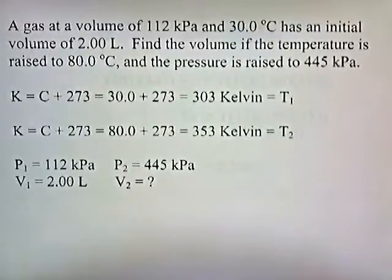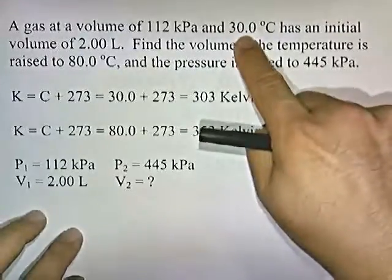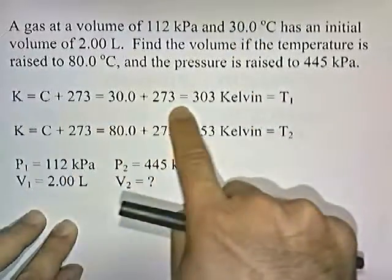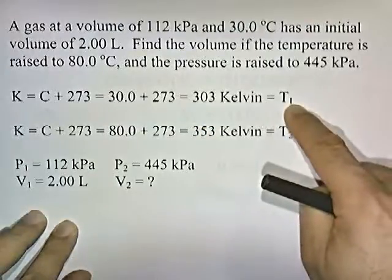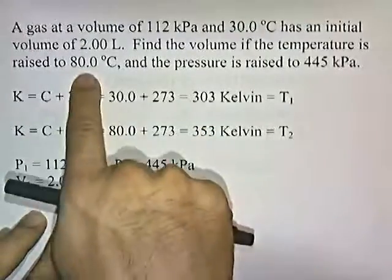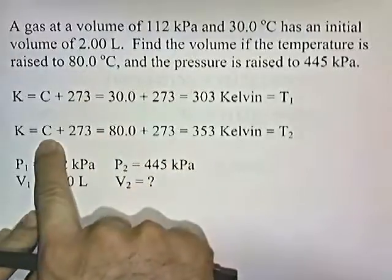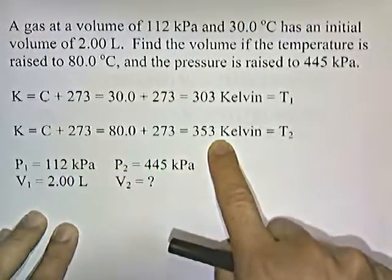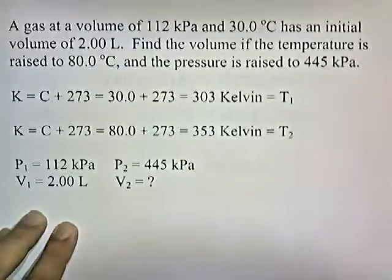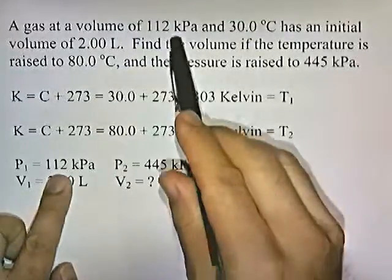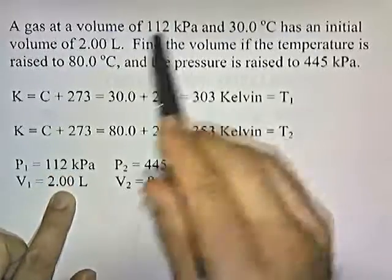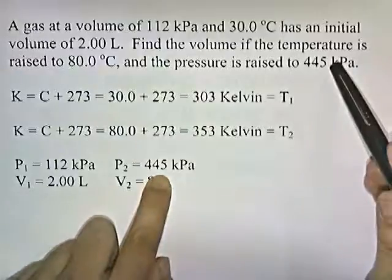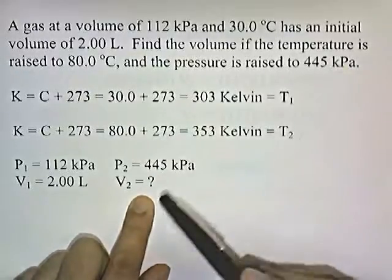First, let's convert our Celsius temperatures into Kelvin. 30 degrees Celsius: 30 plus 273 is 303 Kelvin — that's the initial temperature. 80 degrees Celsius: 80 plus 273 gives 353 Kelvin — that's the new temperature. The initial pressure is 112, the initial volume is 2, the new pressure is 445, and we're going to solve for the new volume.